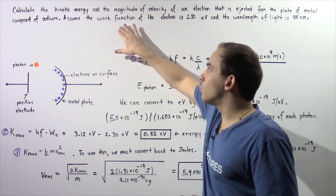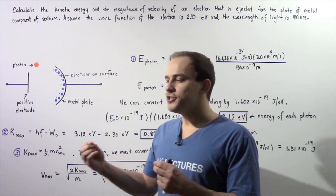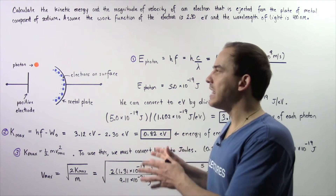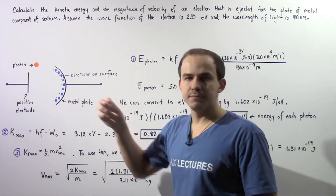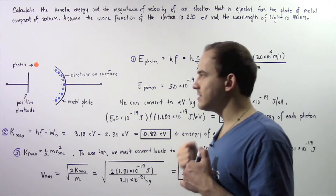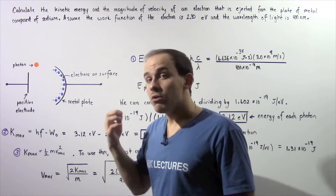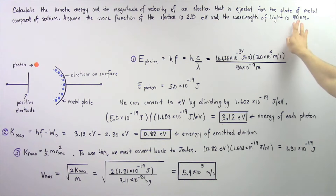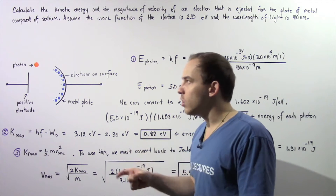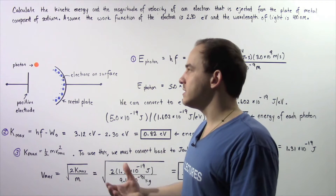Recall that the work function is simply the energy that is required by the electron to overcome the electric forces between the electron and the protons found within that metal. We essentially have a beam of light that strikes the metal plate. This beam of light contains a wavelength of 400 nanometers and consists of individual photons, each carrying a certain quantity of energy.